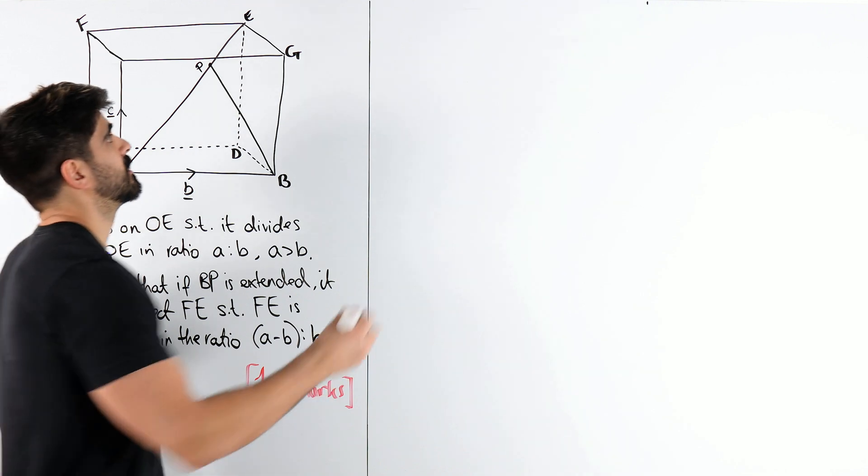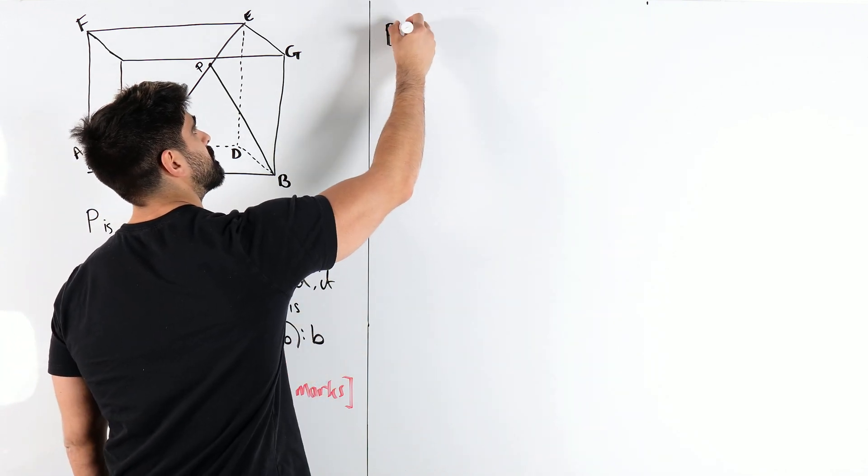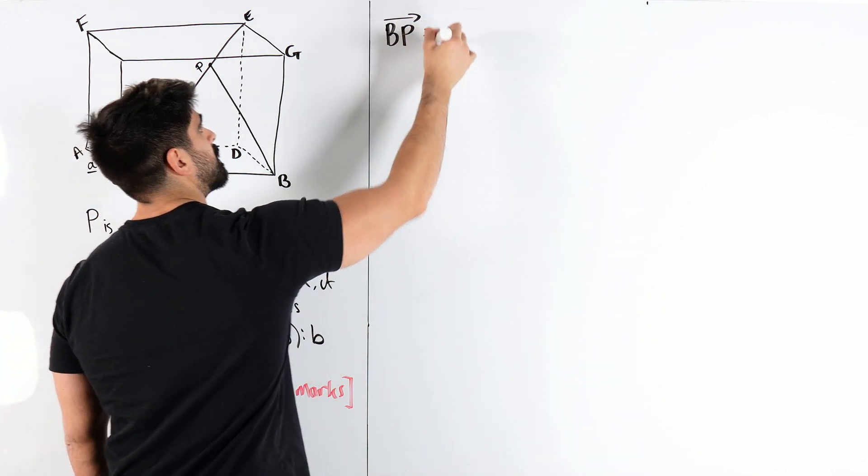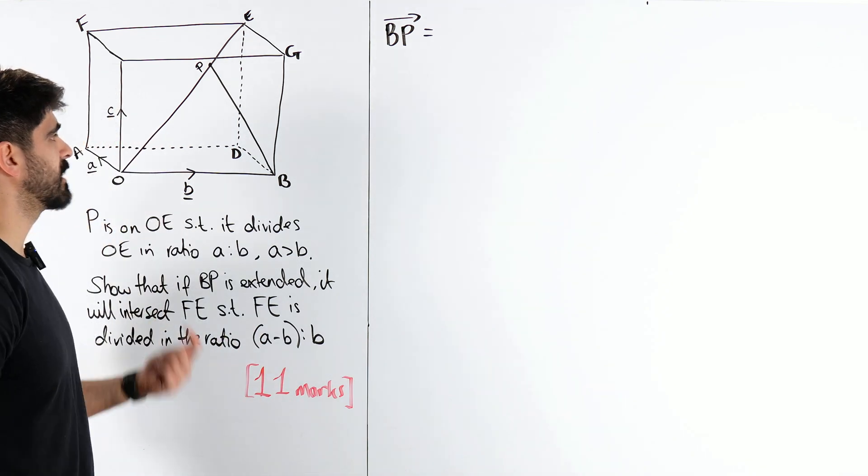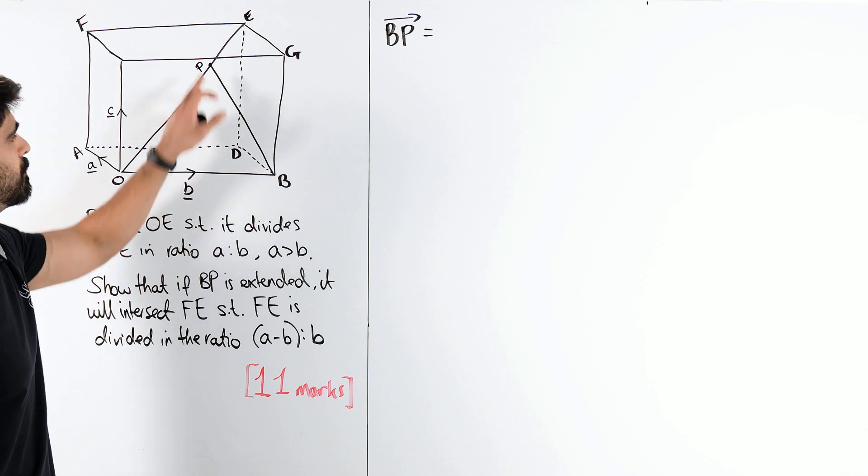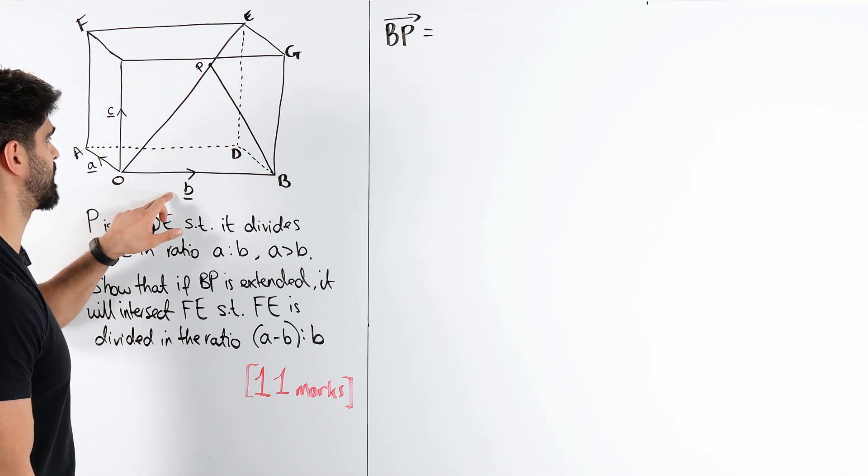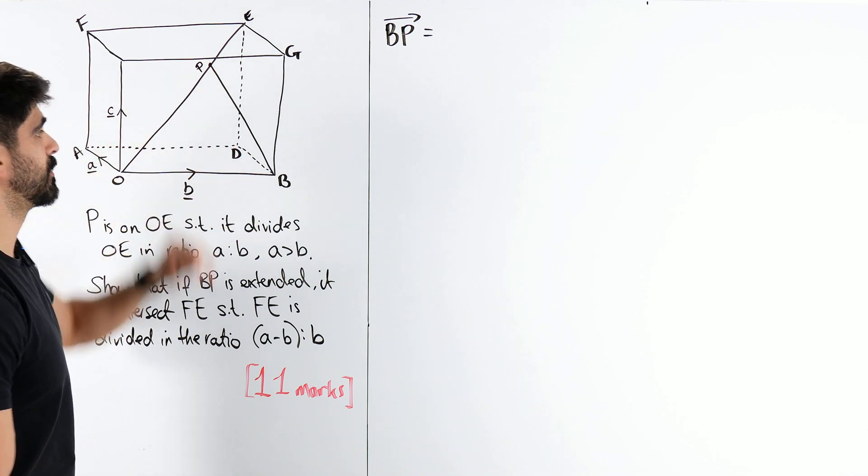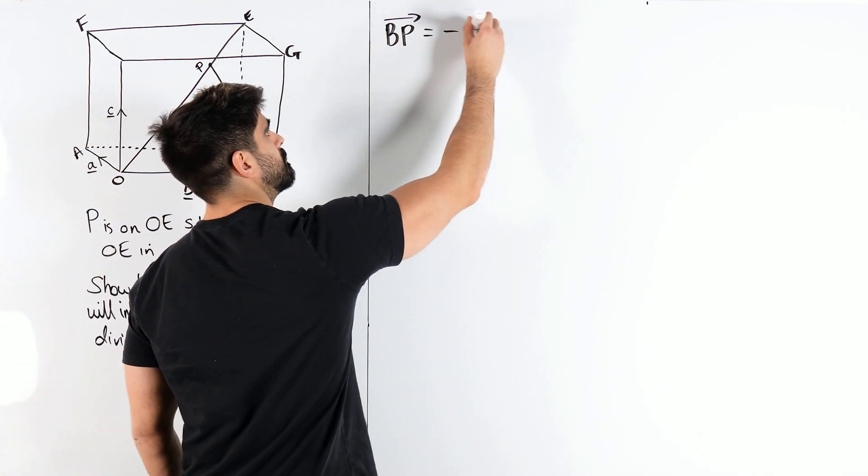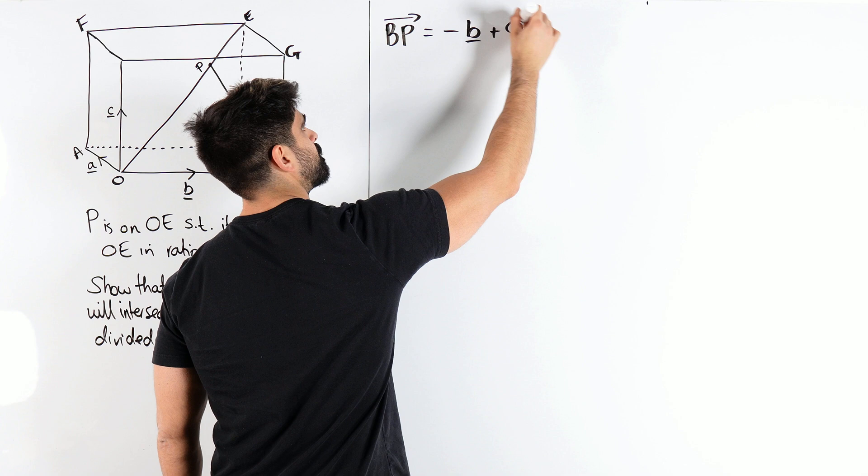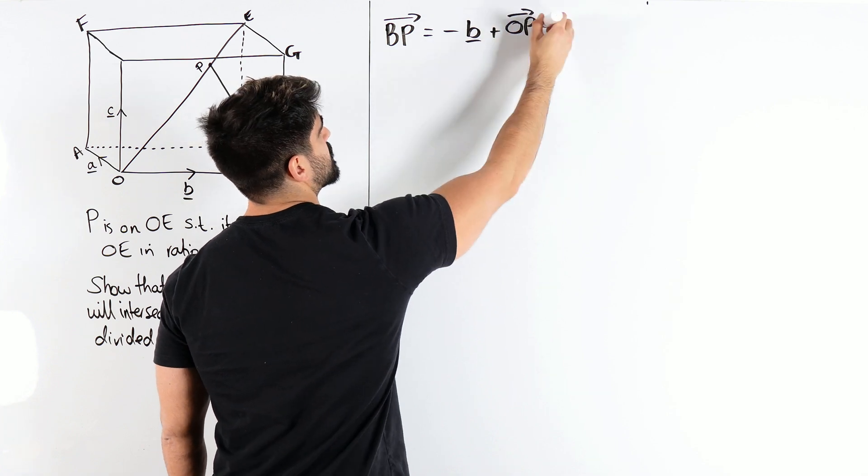Alright? So, let's work out what BP is. Now, we have to use directions that we know. To go from B to P, I'm going to go to O, which is negative B, and then I'm going to go OP. Now, what is OP?